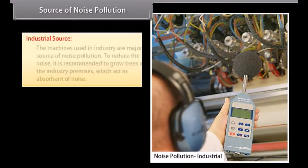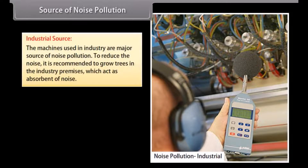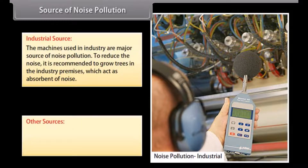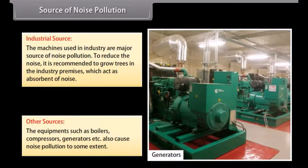The machines used in industry are a major source of noise pollution. To reduce noise, it is recommended to grow trees in the industry premises, which act as absorbents of noise. Equipment such as boilers, compressors, generators, etc., also cause noise pollution to some extent.